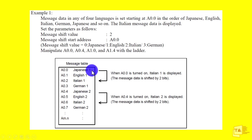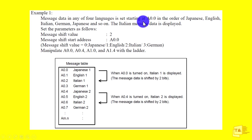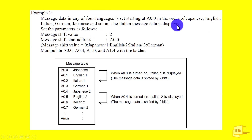For example, the MNC Stop alarm — MNC Stop Activated — is displayed in different languages. Message data in any of four languages is set starting at A0.0 in the order of Japanese, English, Italian, German. So the Italian message is displayed.